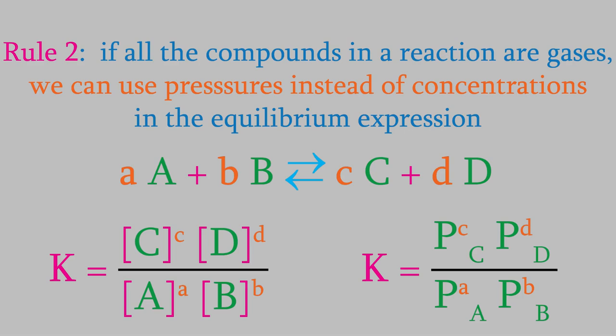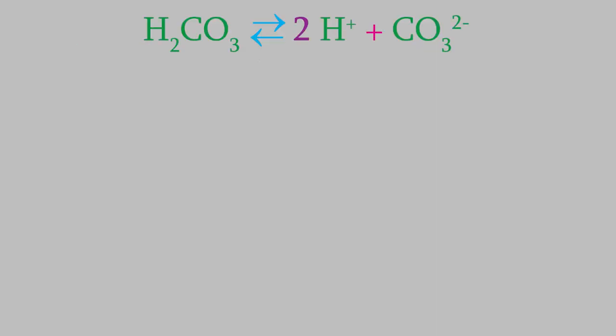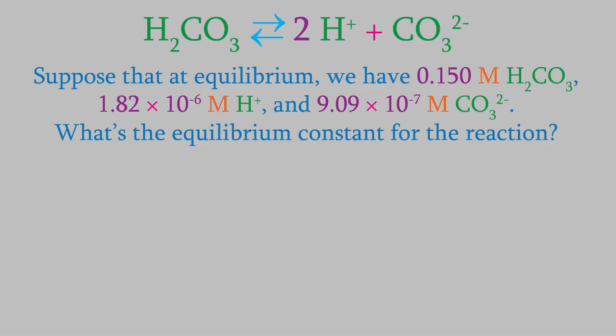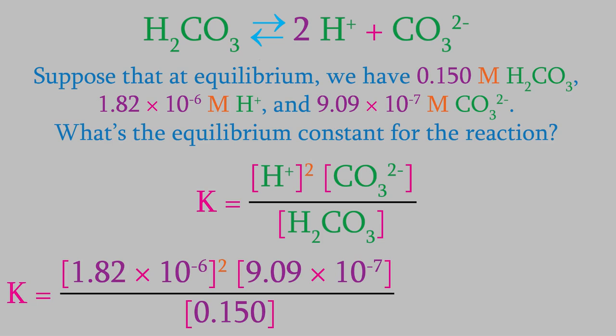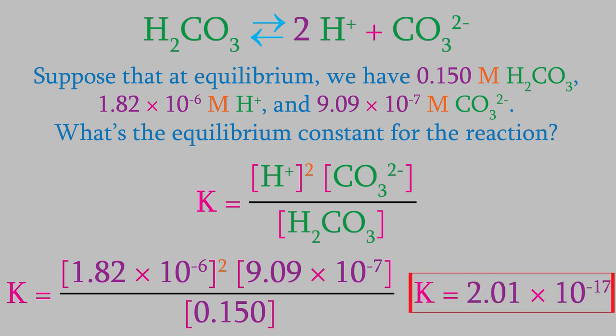Now let's try a few examples with numbers. Suppose we have this reaction. At equilibrium, we measure the concentrations and find that we have 0.150 molar carbonic acid, 1.82 × 10⁻⁶ molar H⁺, and 9.09 × 10⁻⁷ molar carbonate. What's the equilibrium constant for this reaction? First, we need to write the equilibrium expression. All the compounds are aqueous, so they all go in the fraction. The exponents on carbonic acid and carbonate are both 1, but the one on H⁺ is 2. Now we'll plug in the concentrations we were given, and we find that K is equal to 2.01 × 10⁻¹⁷.